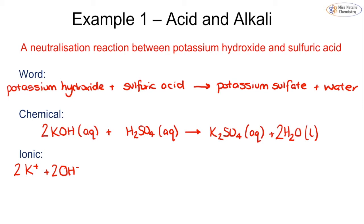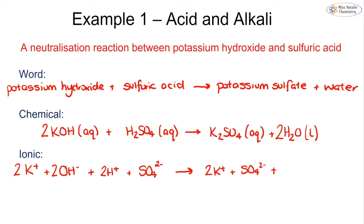For sulfuric acid, we split it into two parts: a hydrogen ion and a sulfate ion. Because the formula is H2, we have two hydrogen ions and one sulfate ion SO4 2−. Then potassium sulfate is also aqueous, so we split it down: K2 tells us we have two potassium ions and one sulfate ion SO4 2−. Water has a state symbol of liquid, so it does not dissociate — we simply write it as it is.